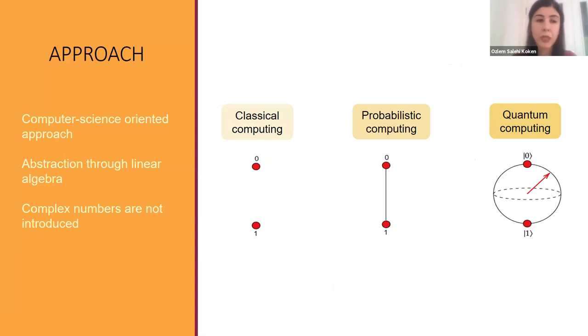The approach behind Bronze is that it's computer science oriented and almost doesn't contain any physics at all. The concepts are abstracted to linear algebra. As a choice, complex numbers are not introduced at all. This is preferred in order not to introduce one more level of complexity into the picture, which will come by complex numbers. In Bronze, quantum computing is viewed as a generalization of classical computing. In classical computing, bits can be either zero or one. Then we move on to probabilistic computing, where bits can have any value between zero and one. In quantum computing, we're also allowing negative numbers and square roots, so we have a generalization starting from classical going to probabilistic and then to quantum computing.